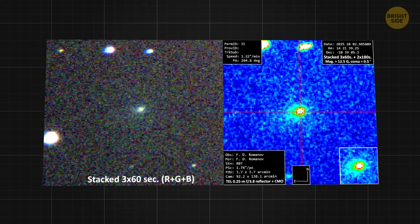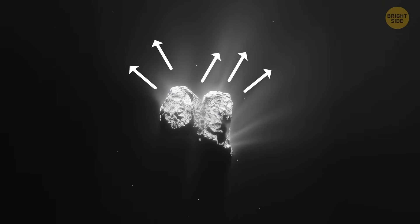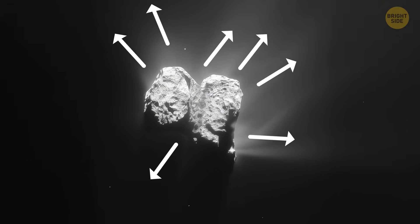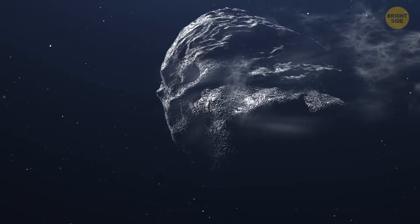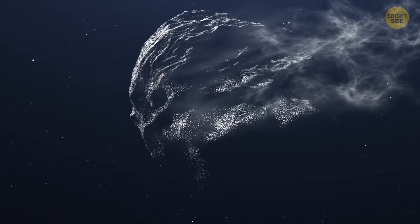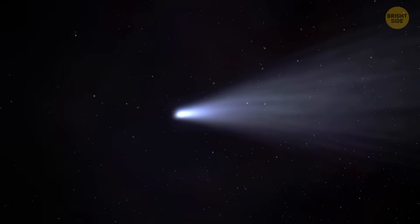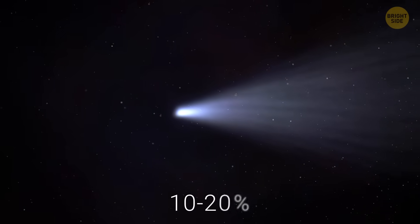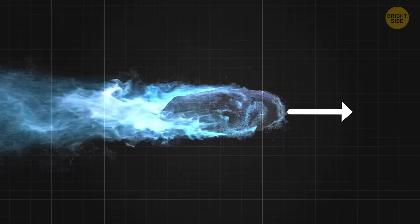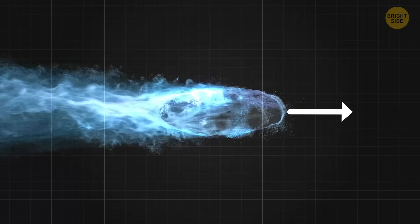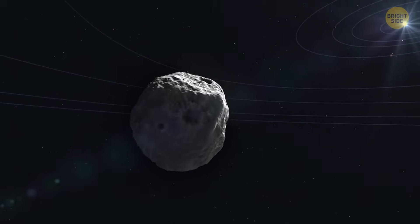Now, new photos have also shown that 3I Atlas has at least 7 jets blasting material into space, some shooting in totally opposite directions. Now, if this thing is just a normal comet, it would have had to lose a huge amount of its original mass when it passed near the Sun – way more than just 10-20%. Only some of that material would actually push the object in one direction. So, the total amount blown off would need to be massive.